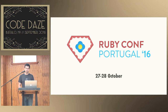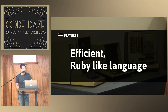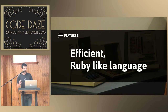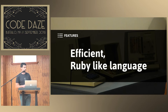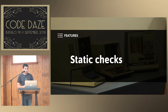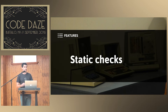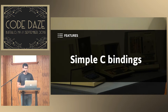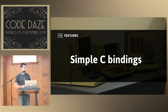Moving on to Crystal. Crystal is an efficient Ruby-like language. This is one of the main features of the language. Efficiency is important. The Ruby-like aspect is not as important, but it definitely makes sense for people coming from the Ruby community. It has static checks and it's a compiled language — it's not interpreted as Ruby is — so you're going to see some differences because of that.